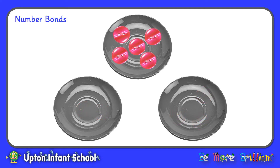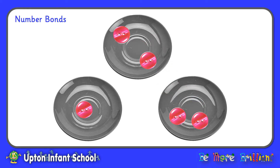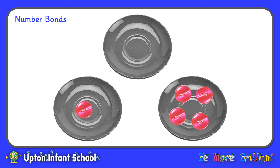So now I put my five buttons back on the first saucer and I'm going to investigate if I can use any different ways to break my five buttons into two groups. So this time I'm just going to put one button on this saucer and the other four buttons on this saucer. So I've got a group of one and a group of four. One and four makes five.